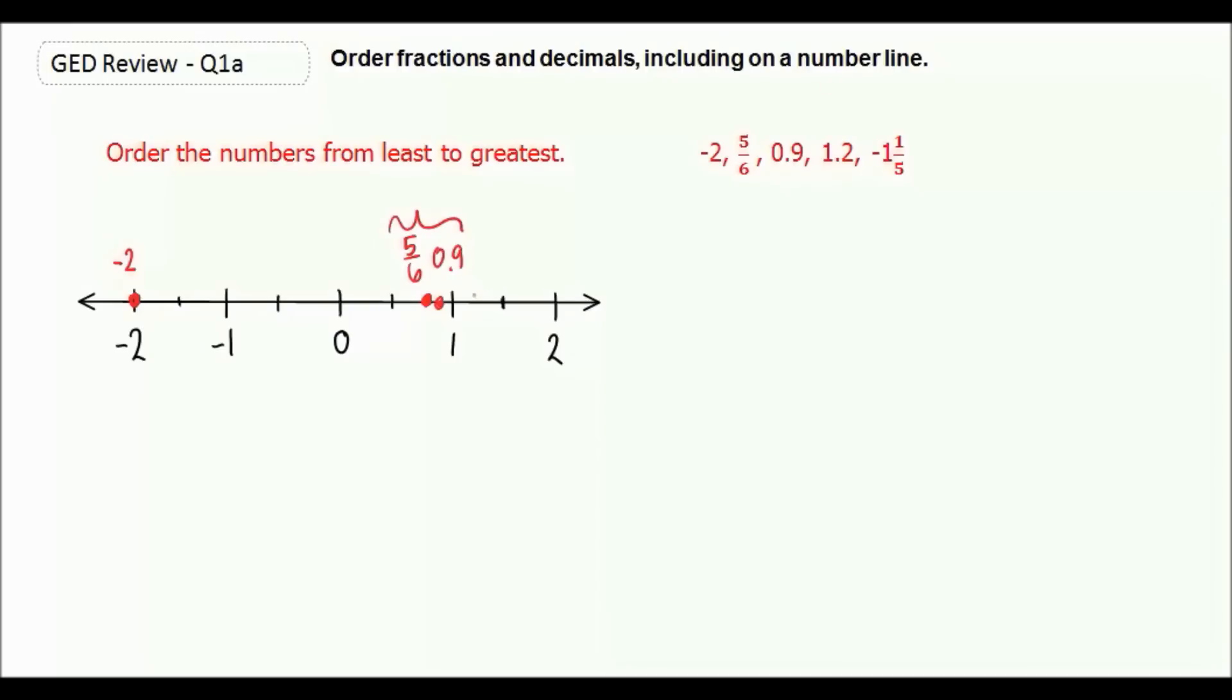1.2 would be right about here, and negative 1 and 1/5, here's negative 1, and 1/5 would be a little bit further, so we have negative 1 and 1/5.